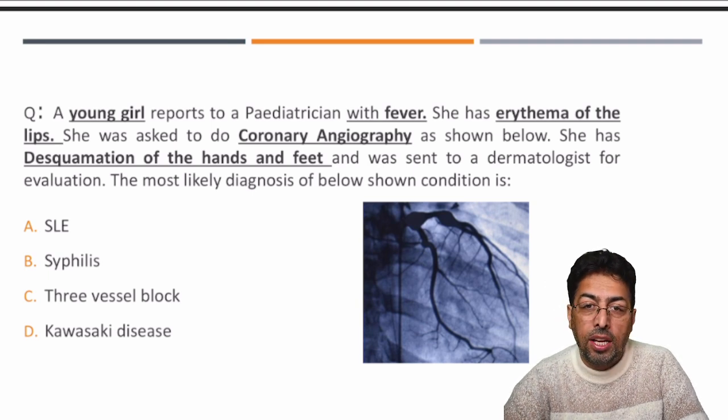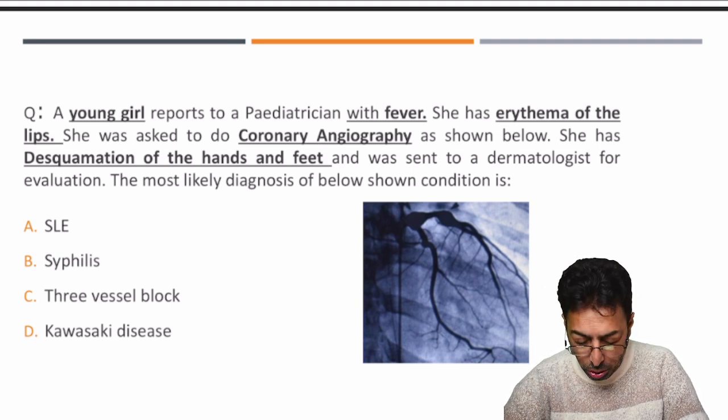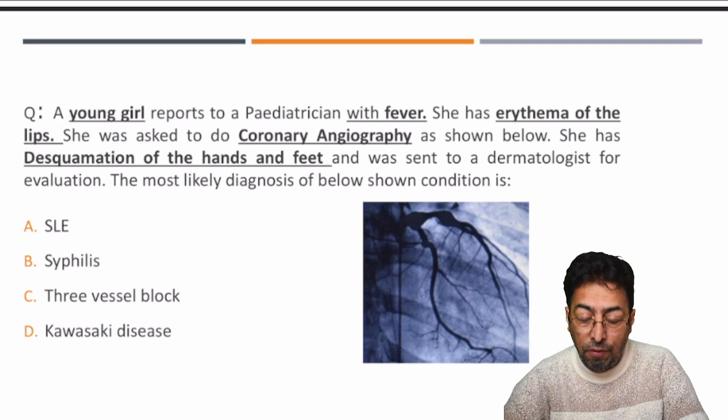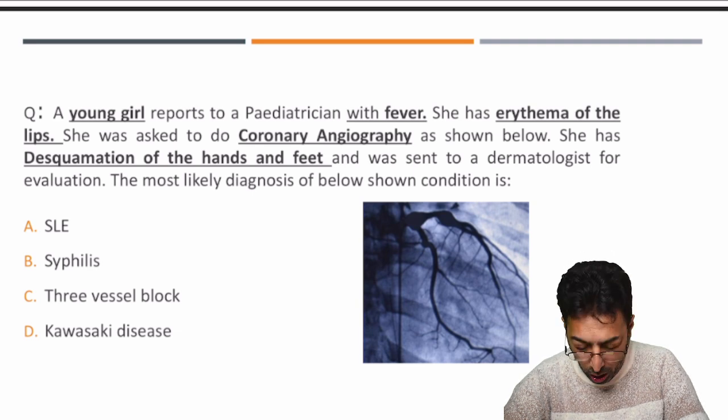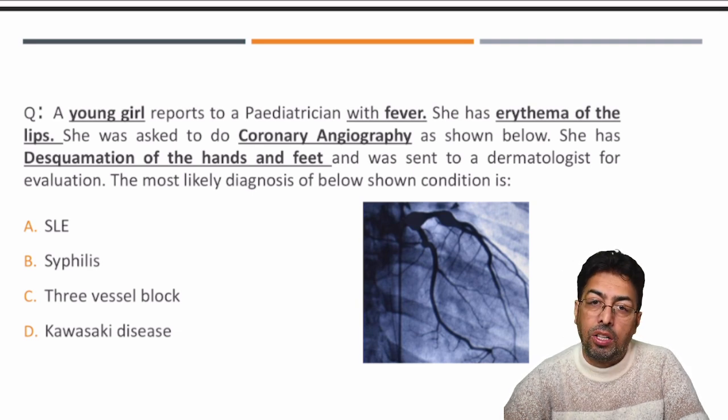The options are: SLE (systemic lupus erythematosus), syphilis, three-vessel block, and Kawasaki disease.